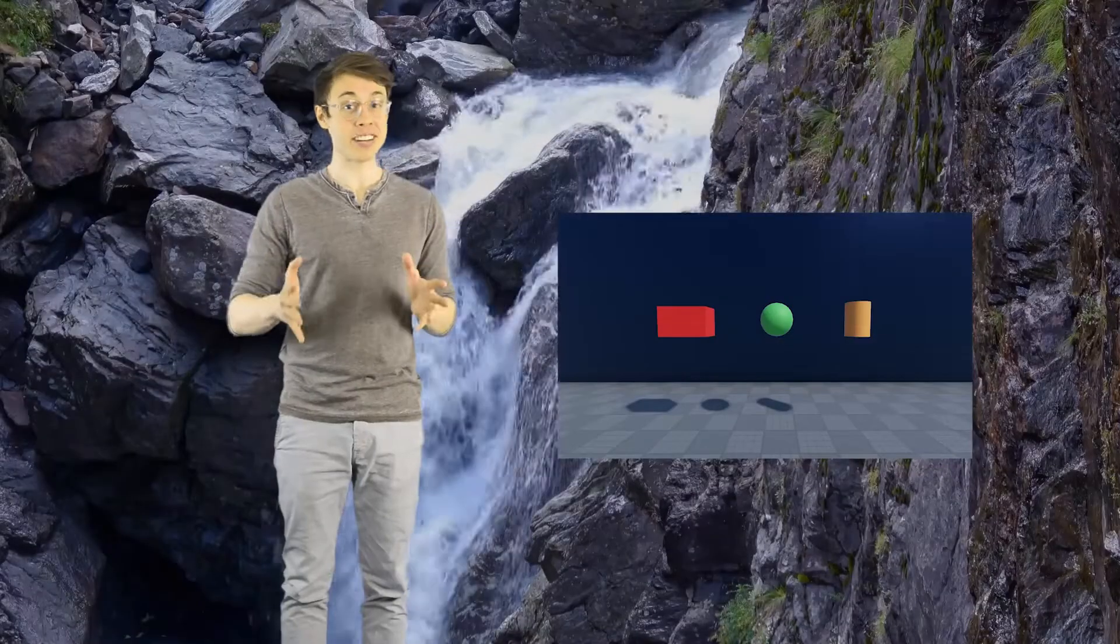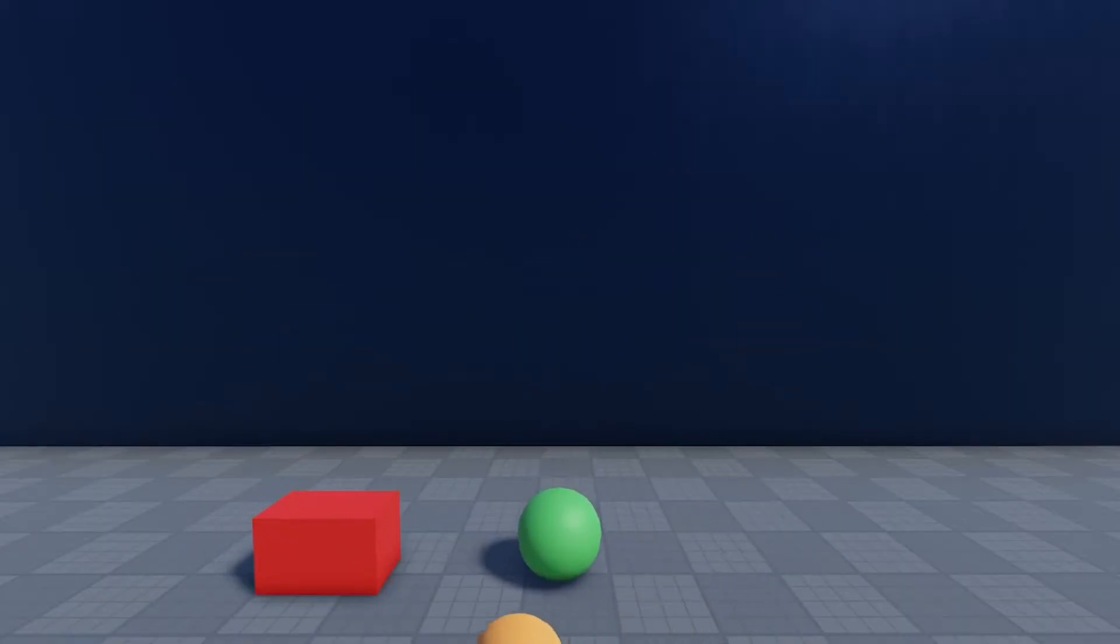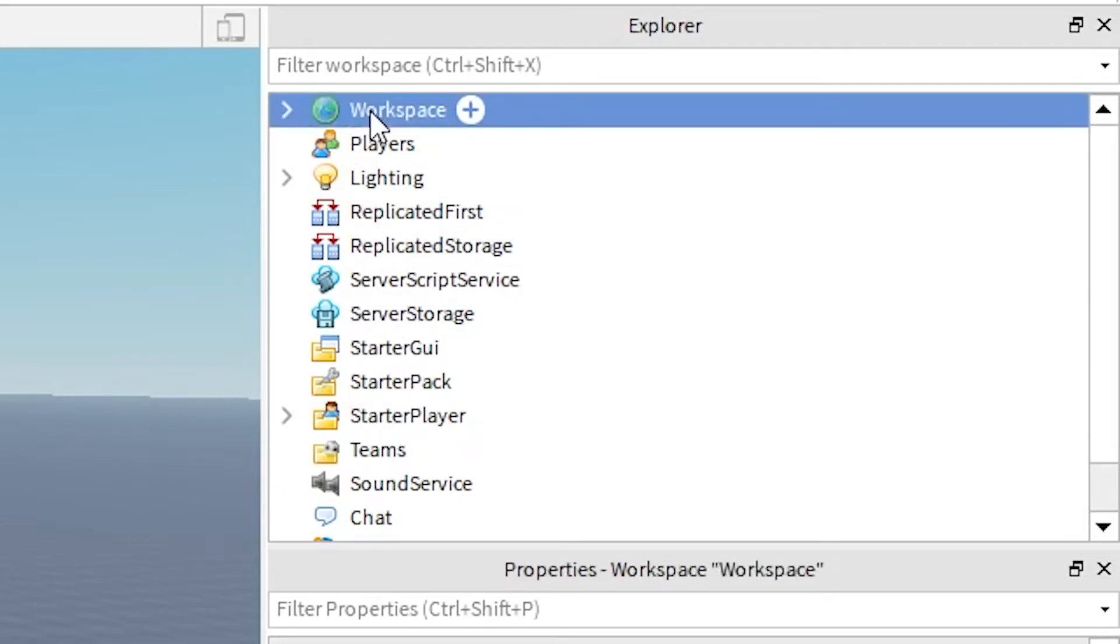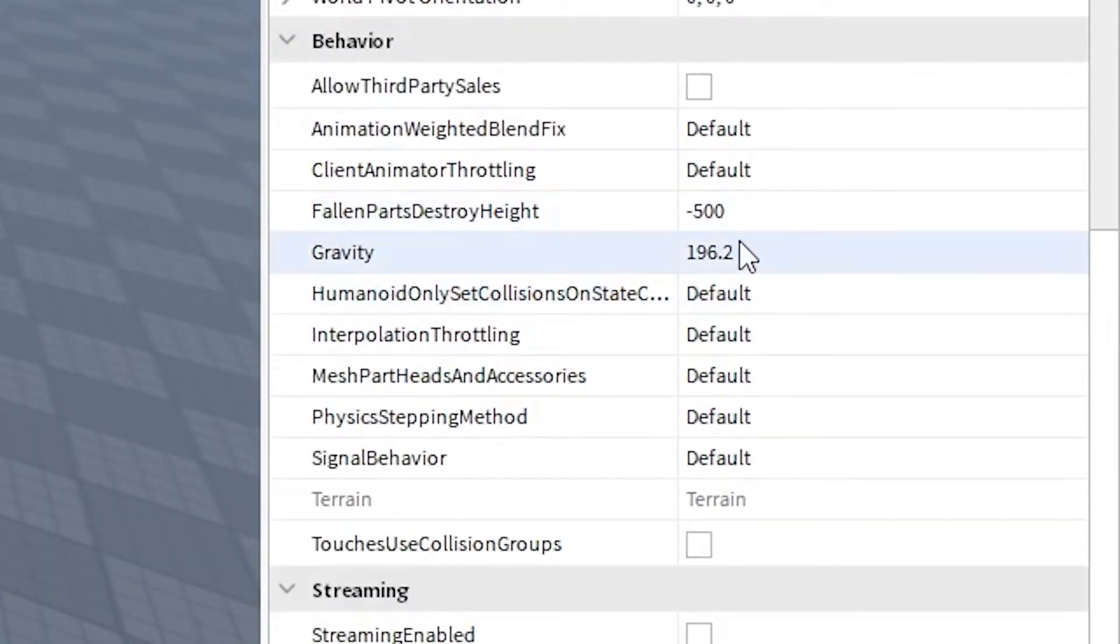Roblox has a default gravity setting which looks like this. If you click on the workspace object and scroll down to the properties window, you'll see a property labeled gravity.